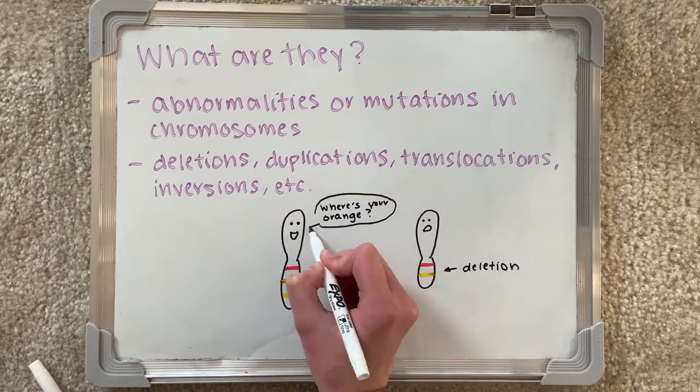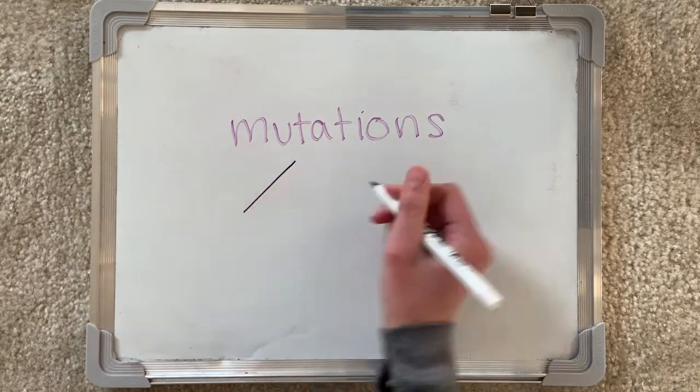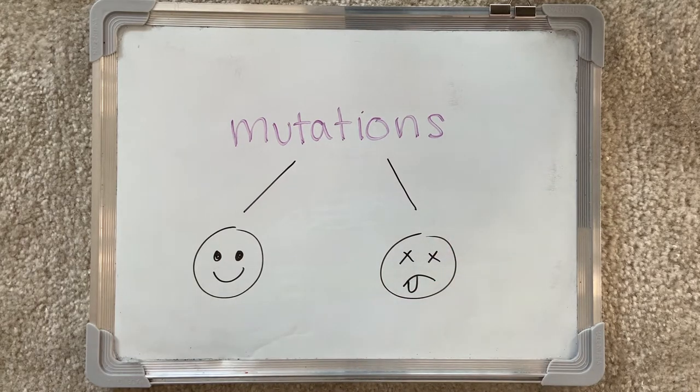In this video, we are going to be doing an example involving inversions. When abnormalities within a chromosome occur, the fate of the offspring may be affected. Oftentimes, mutations are useless and non-functional, but on some occasions, they can be harmful.